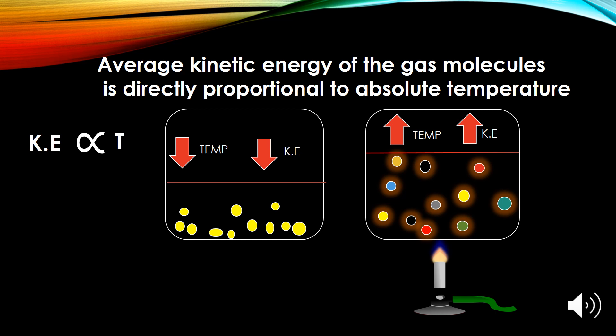Whereas in the second diagram as we increase the temperature the kinetic energy of the molecules also increases. And as a result the gas molecules move faster with the increase of temperature. So the temperature is directly proportional to the kinetic energy of the molecules.